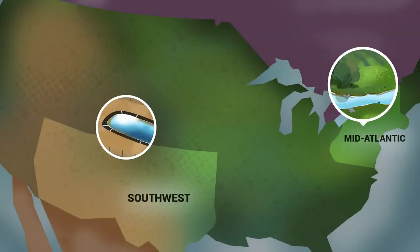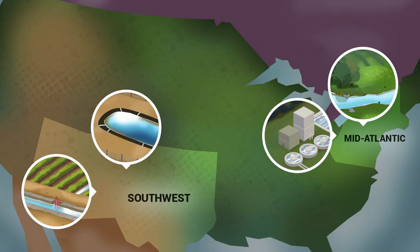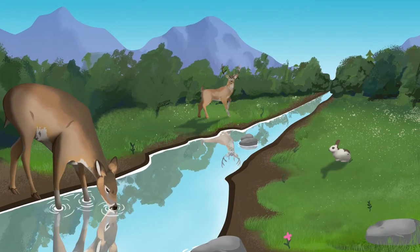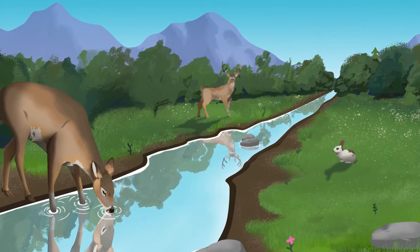Irrigation water can come from streams, ponds, ditches, or treatment plants. This water could be contaminated because it comes into contact with animals, people, and soil.